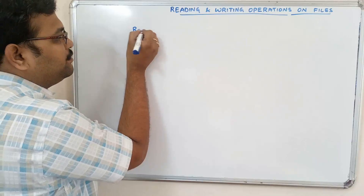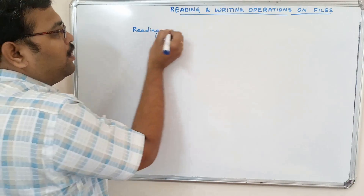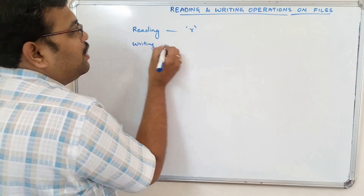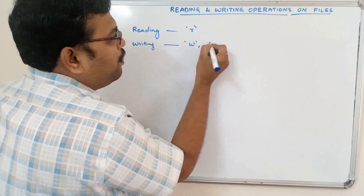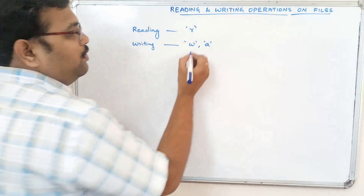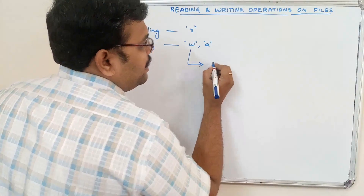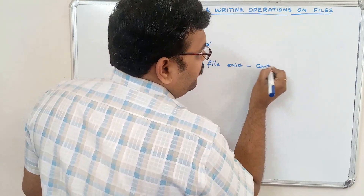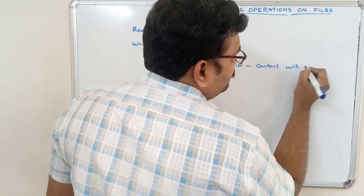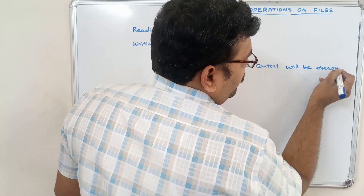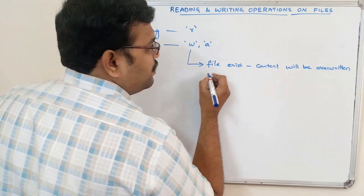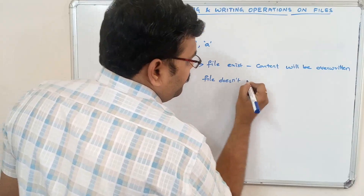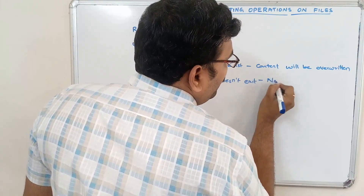For a reading operation, a file should be opened in read mode. For a writing operation, a file should be opened in either write mode or append mode. In write mode, if the file exists the content will be overwritten — all the previous content will be overwritten. If the file doesn't exist, a new file will be created.